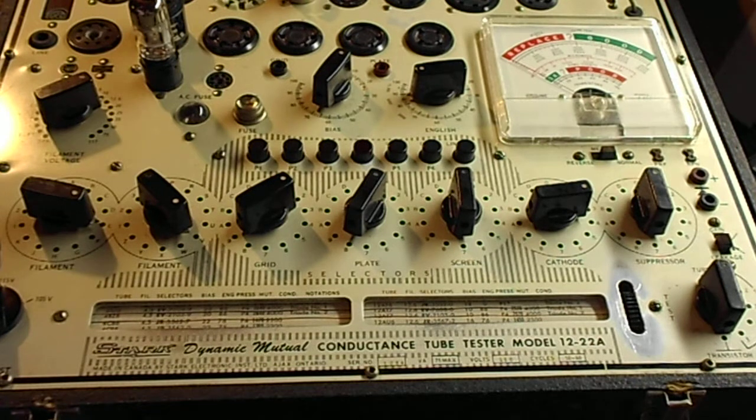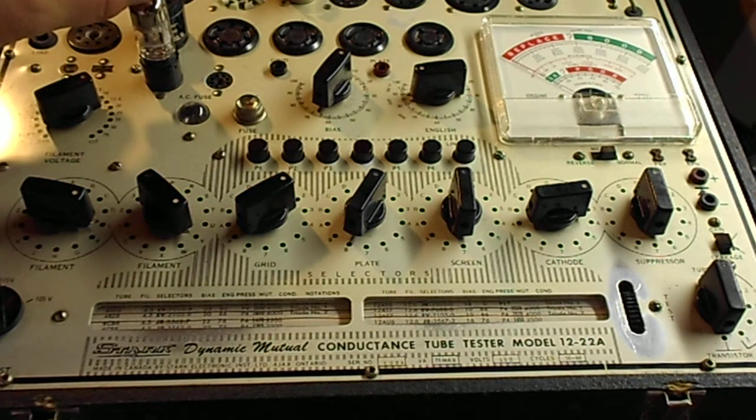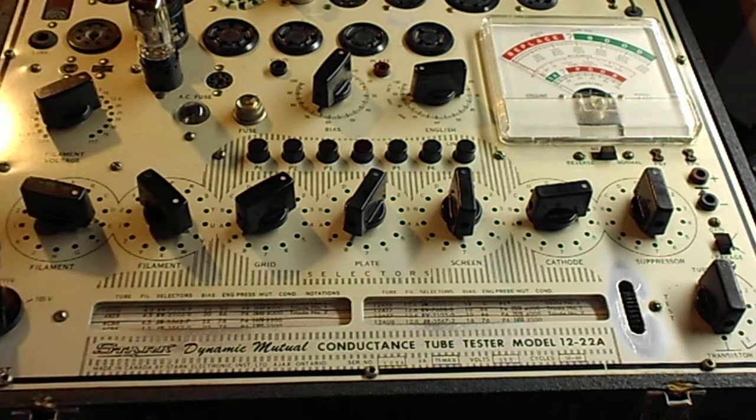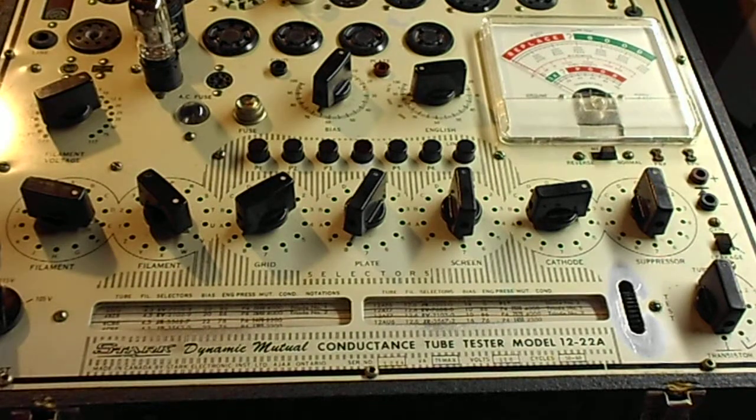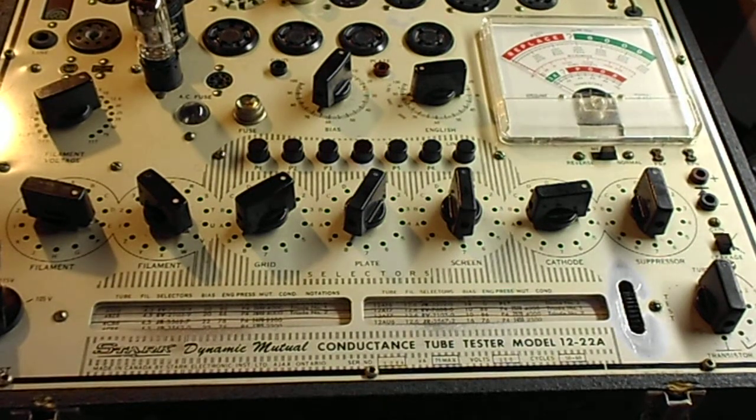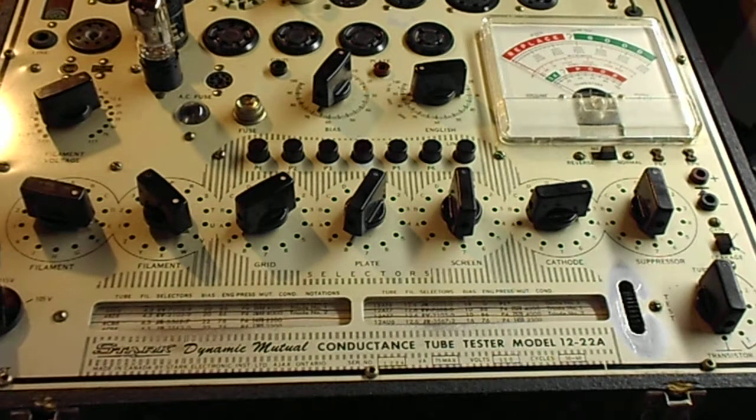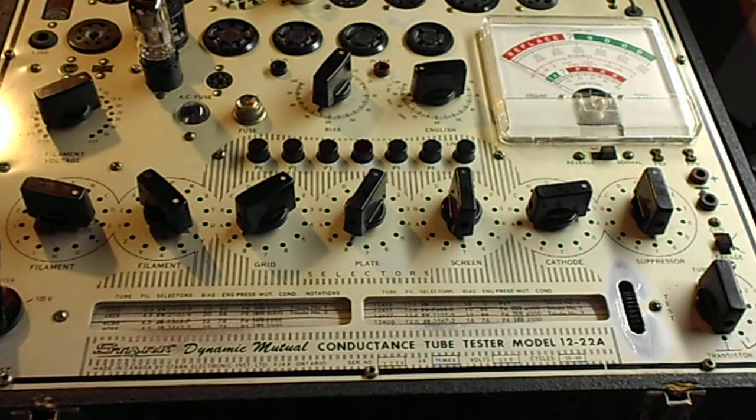What I'm testing today is a 12AT7 preamp tube. Now, according to the criteria on the scroll in the meter, the mutual conductance range for the 12AT7 is 2520 to 4000, so whatever that means. We'll talk more about that later. Let's go ahead and measure this tube.